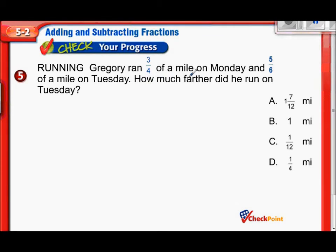Greg, we ran three-quarters of a mile on Monday and five-sixths of a mile on Tuesday. How much further? That sounds like subtraction. How much further did he run on Tuesday? So the problem we're going to solve here is five-sixths, which was how much he ran on Tuesday. We're going to subtract three-fourths. Again, we need that common denominator. What's the least common denominator of six and four? Did you figure it out yet? Twelve.